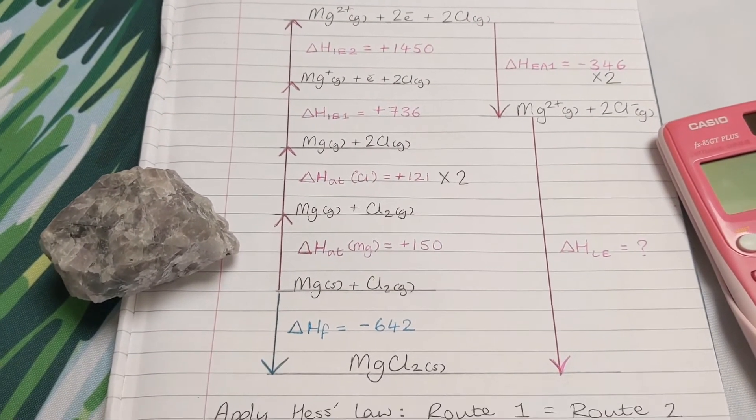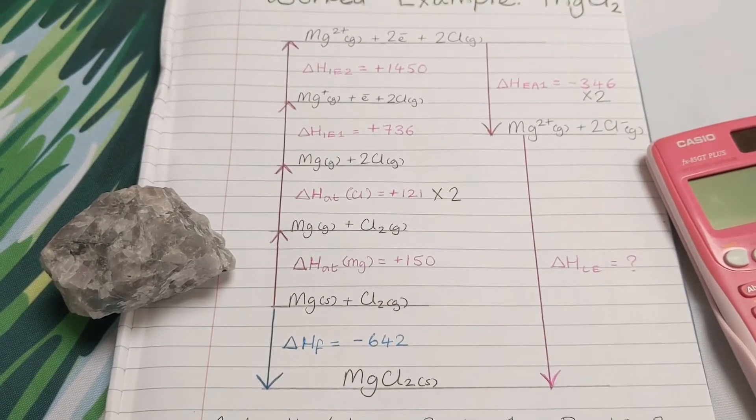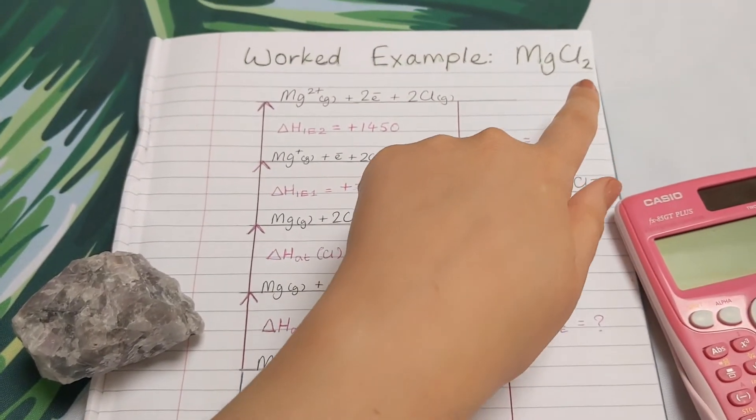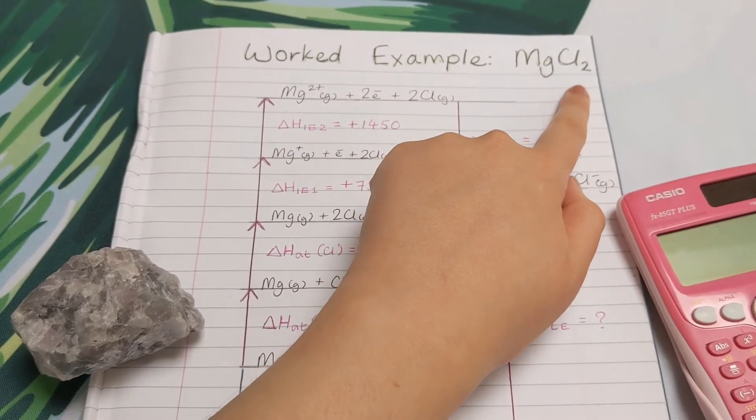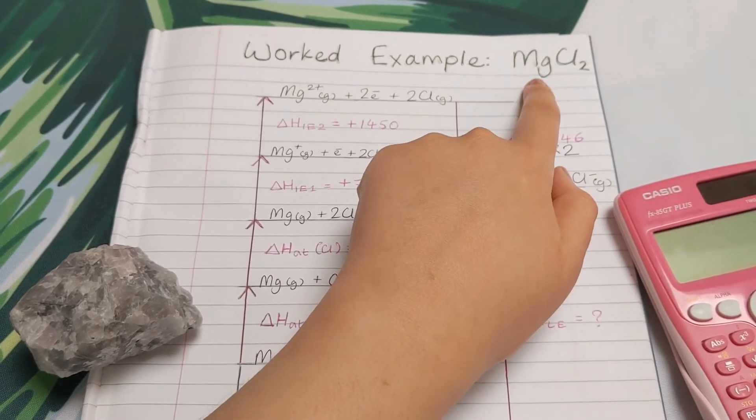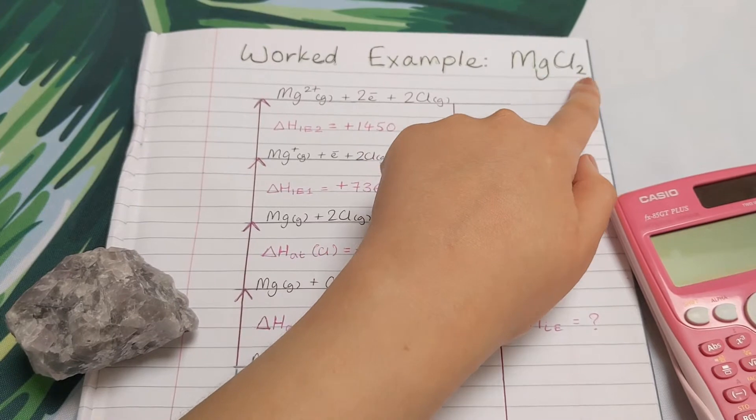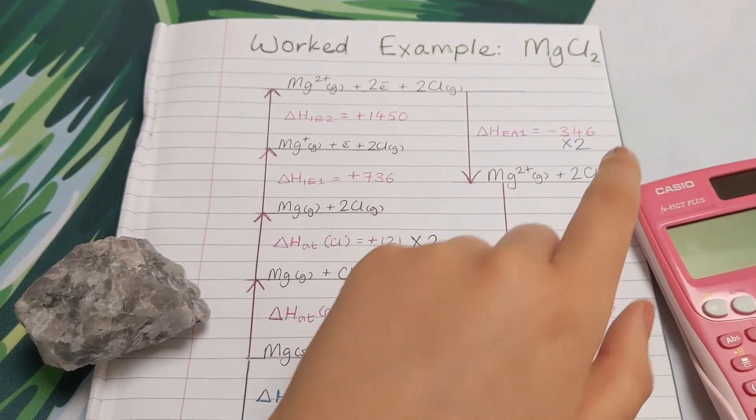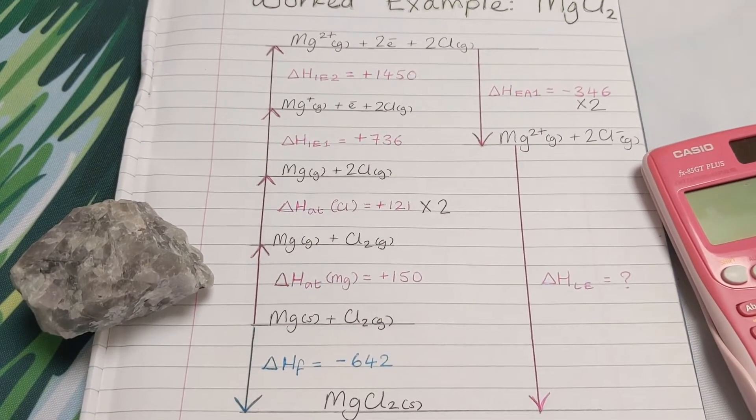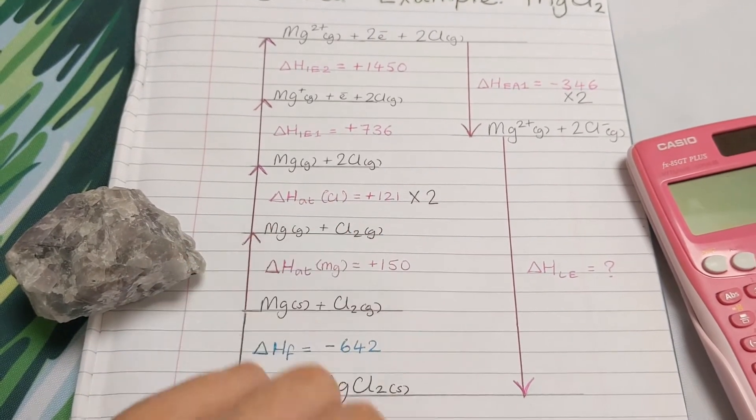And the other different thing compared to the sodium chloride example is that since we have two formula units of the chloride, so the formula is Mg, one of those, Cl2, two of the chlorine, that means if we have any steps that involve just the chlorine,